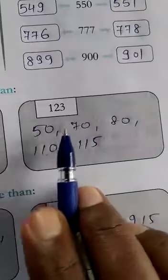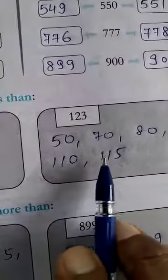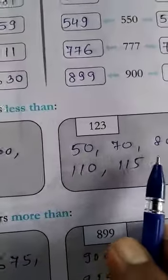Now, 123. Less than the numbers. 50, 70, 80, 110, 115. Other numbers you can also write.